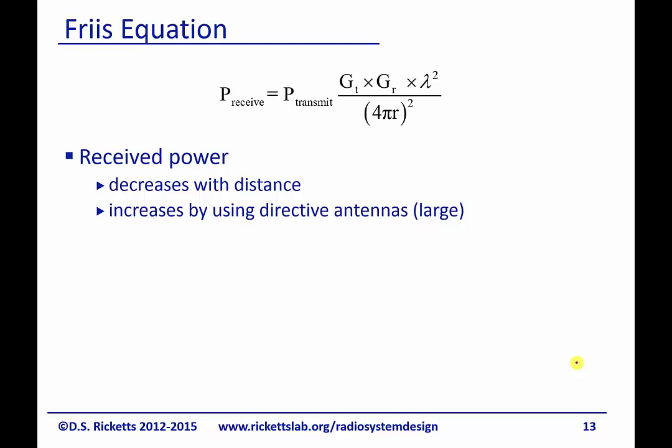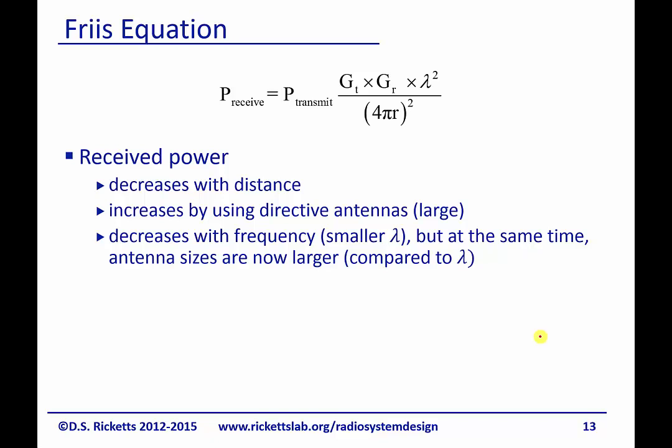It looks like as frequency increases, the wavelength gets smaller, so the received power gets smaller. But at the same time, the antenna sizes are now larger compared to λ. If you remember, in this Gr, there is a λ². Typically they'll give you your directivity for a given λ. So as we scale in λ, your Gr will actually change. You can't just look at this and say λ² will get smaller and therefore I have less received power. You need to remember that Gr is also scaled by λ/2.